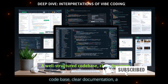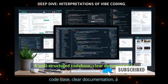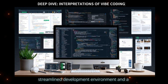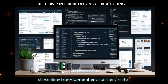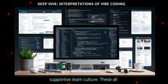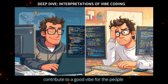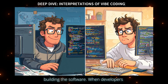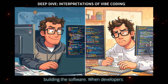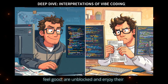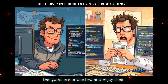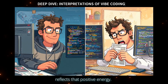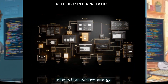A well-structured codebase, clear documentation, a streamlined development environment, and a supportive team culture — these all contribute to a good vibe for the people building the software. When developers feel good, are unblocked, and enjoy their work, the quality of the software often reflects that positive energy.